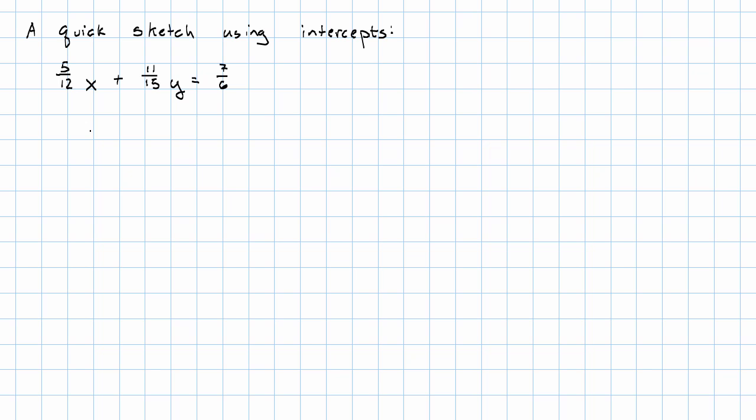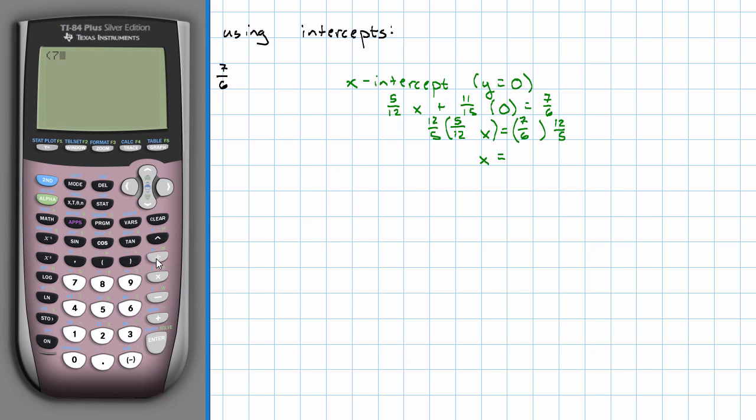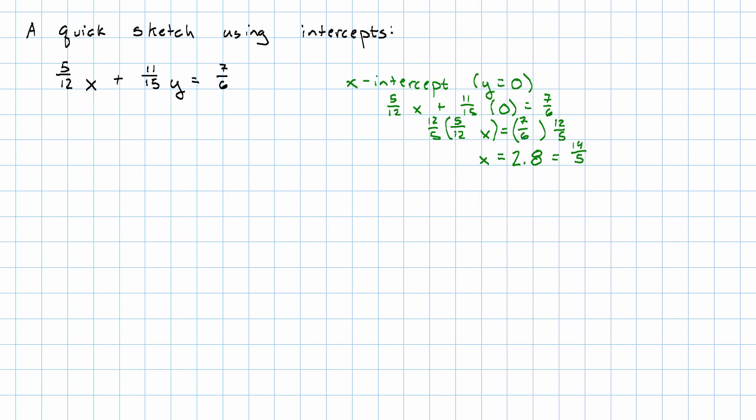I know when I find my intercepts I'm going to get unpleasant numbers, but let's just see what happens. I'll have 5 twelfths x plus 11 fifteenths times 0 at my x intercept equals 7 sixths. So 5 twelfths x equals 7 sixths. I can think of this next step as dividing or as multiplying by 12 fifths, and we get x equals 7 sixths times 12 fifths, which is 2.8, or writing that as a fraction, 14 fifths. Our x intercept then will be (14 fifths, 0).